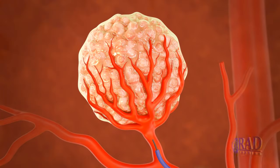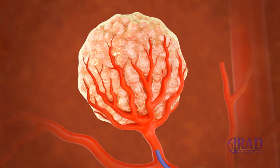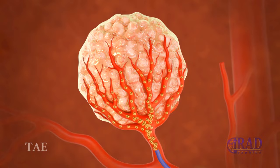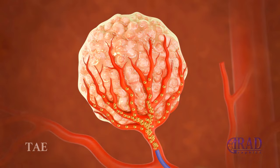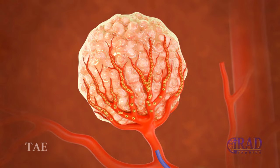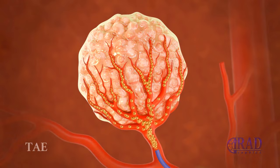Either bland embolization, conventional chemoembolization, or drug-eluting beads chemoembolization can be performed in a similar fashion. For bland embolization, only small particles without chemotherapy agents are injected in pulsatile fashion through the microcatheter until complete embolization and stasis is achieved. The goal of bland embolization is to stop blood flow to the liver tumor and deprive oxygen and nutrients from the tumor cells.